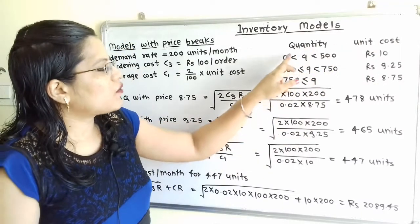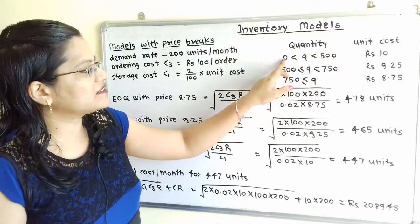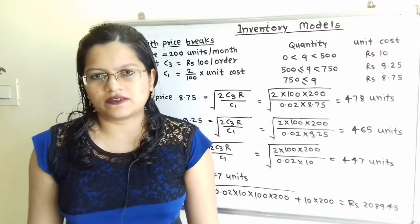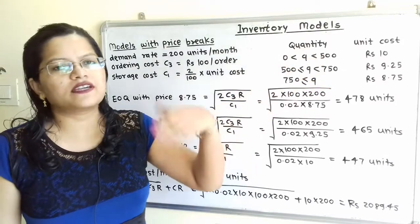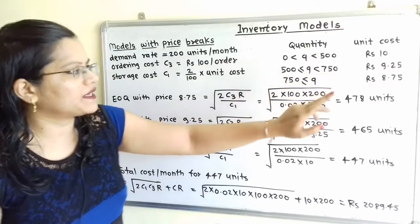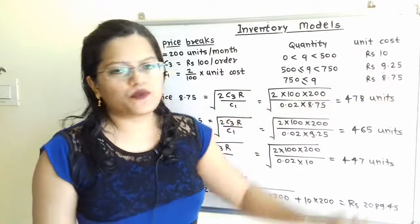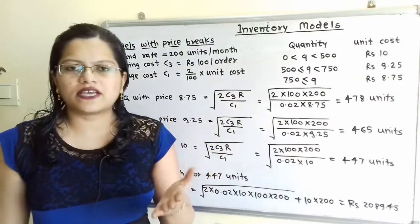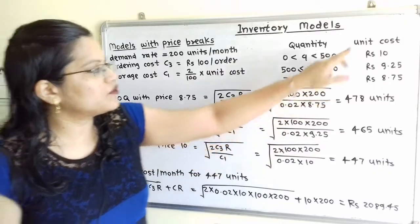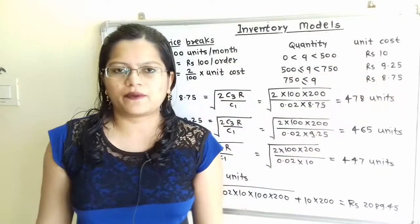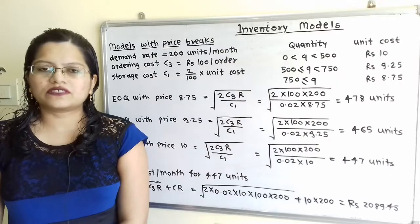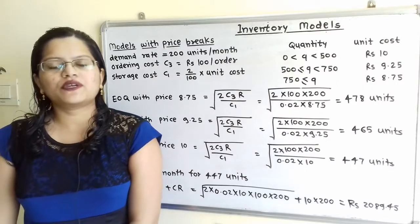The table gives Quantity and Unit Cost. When 0 < Q < 500, unit cost is Rs.10. When 500 ≤ Q < 750, unit cost is Rs.9.25. When Q ≥ 750, unit cost is Rs.8.75. We have to find the optimal order size, that is the Economic Order Quantity.